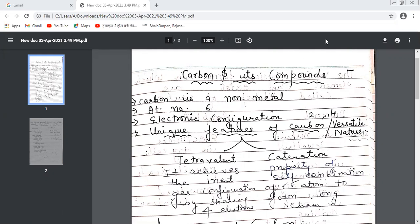First, we'll discuss carbon. Carbon is a non-metal with atomic number six. Its electronic configuration is K-2, L-4, meaning two electrons in the K shell and four electrons in the L shell, since the K shell can accommodate a maximum of two electrons.